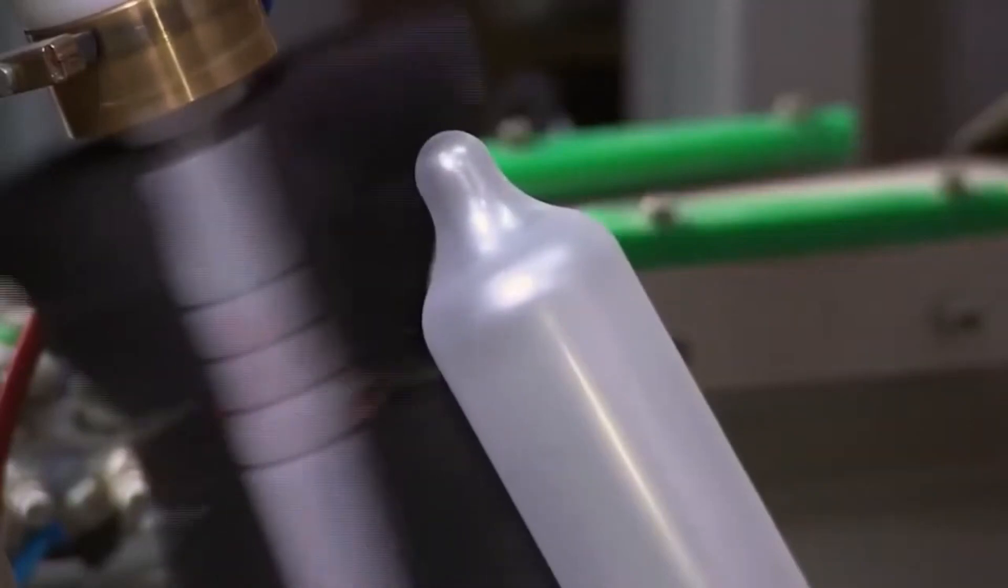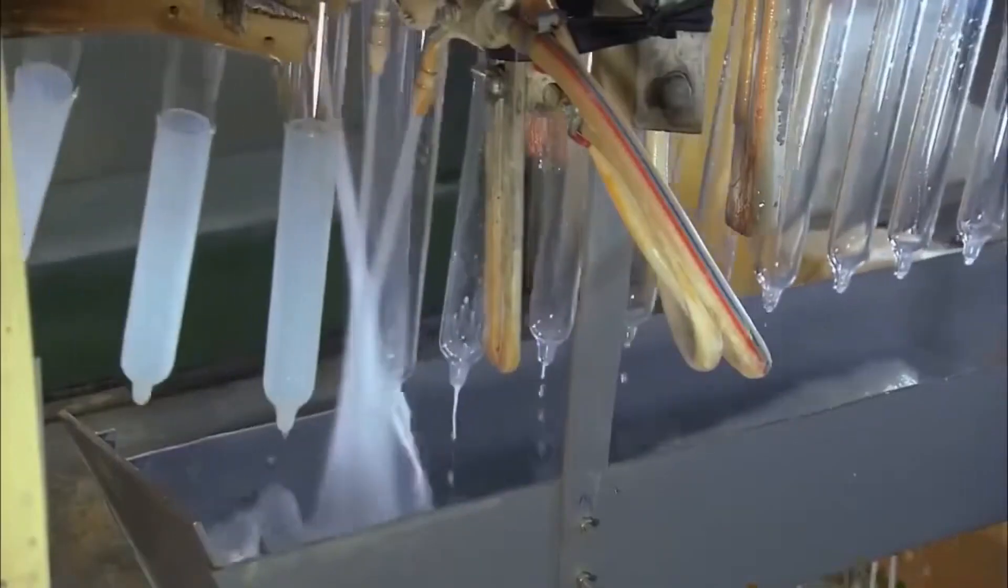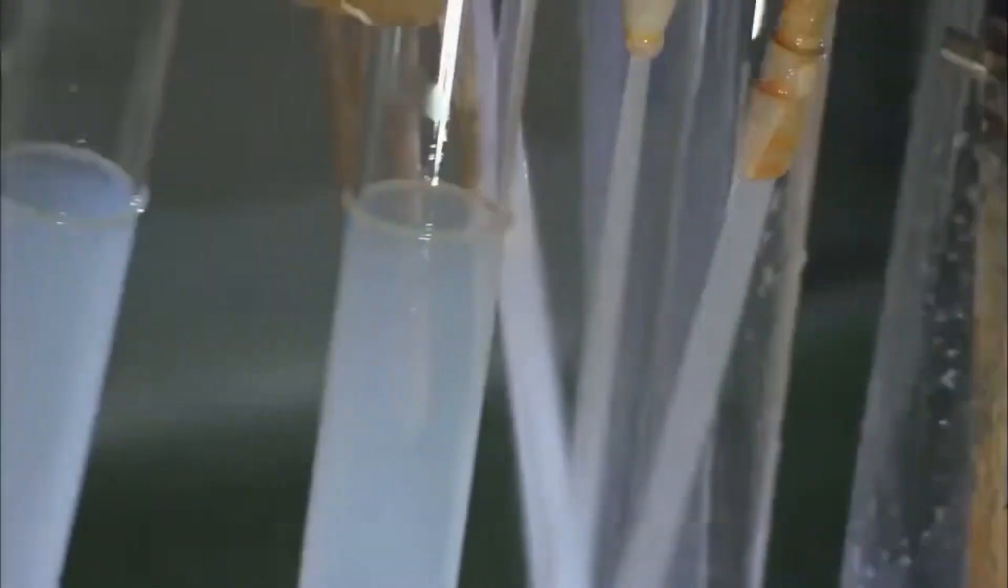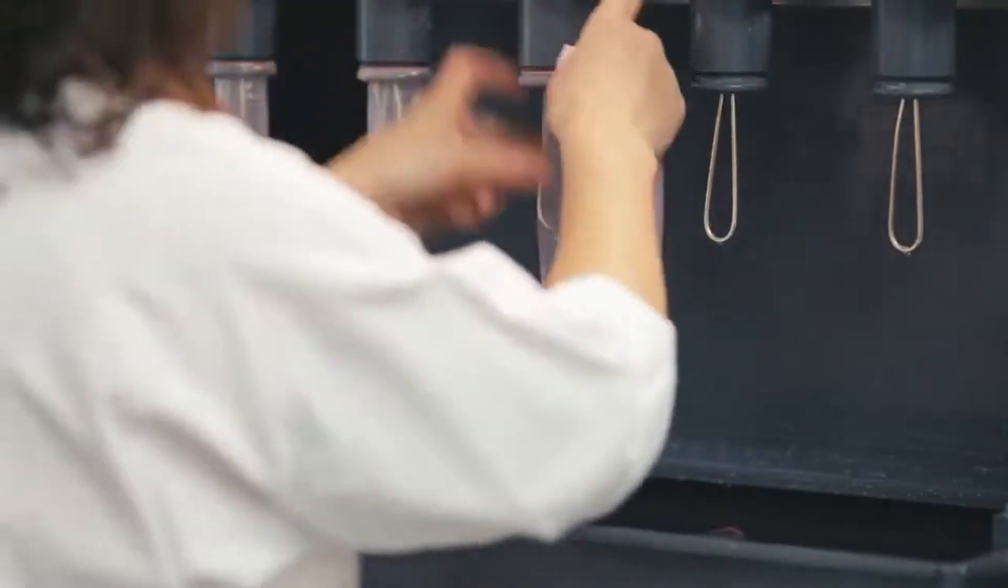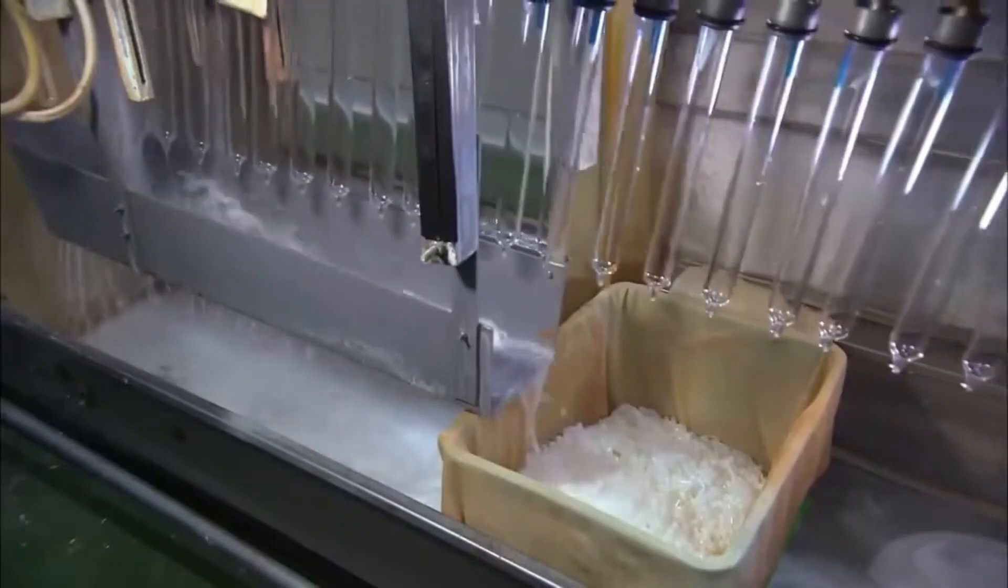Hygiene is paramount in the production of condoms. After vulcanization, the condoms, still attached to their molds, undergo a forceful water jet. This serves a dual purpose. It cleans off any residual latex and chemicals while aiding in the removal of the condom from the mold.